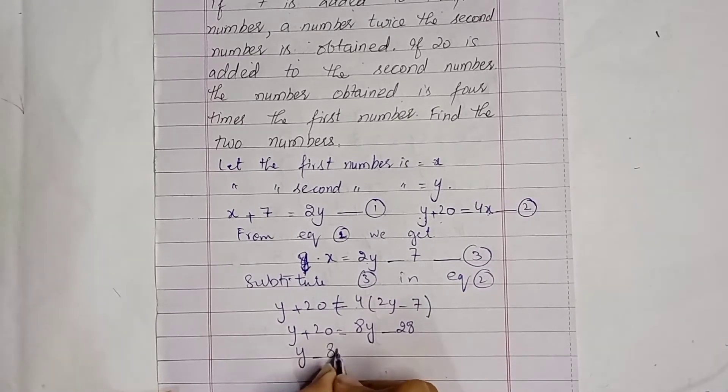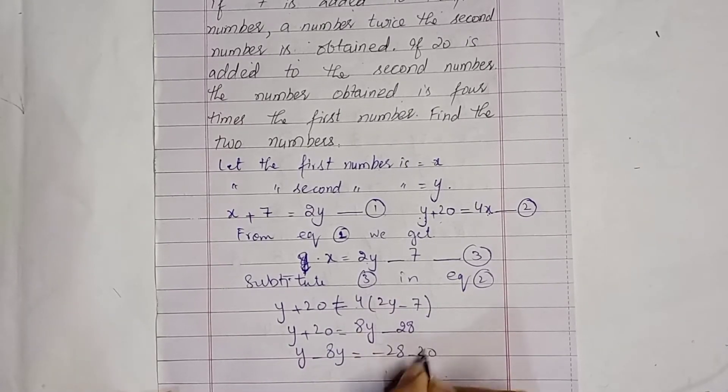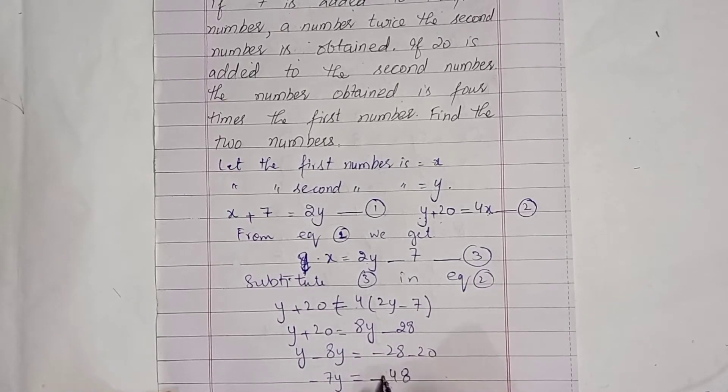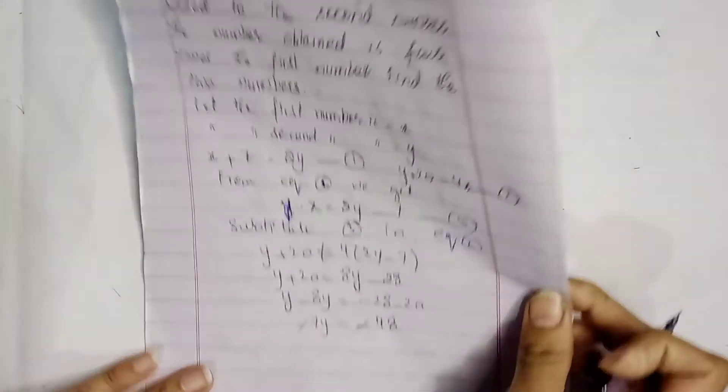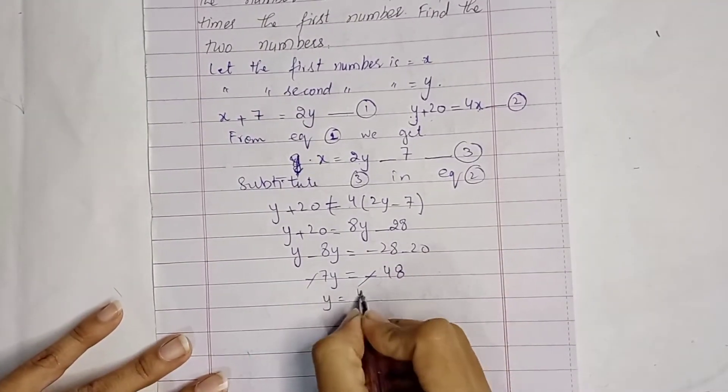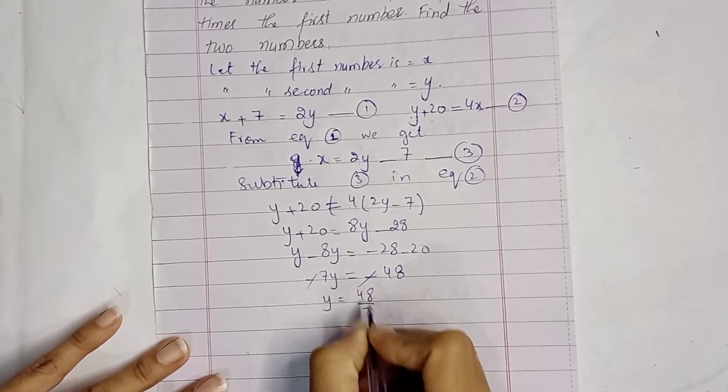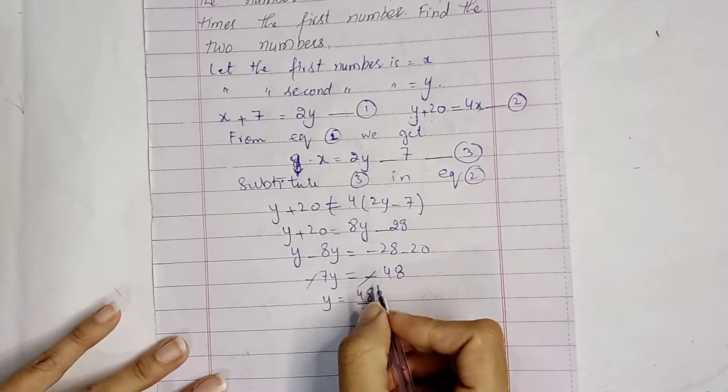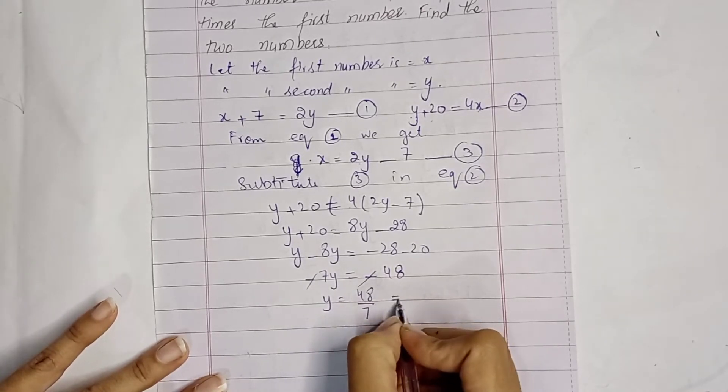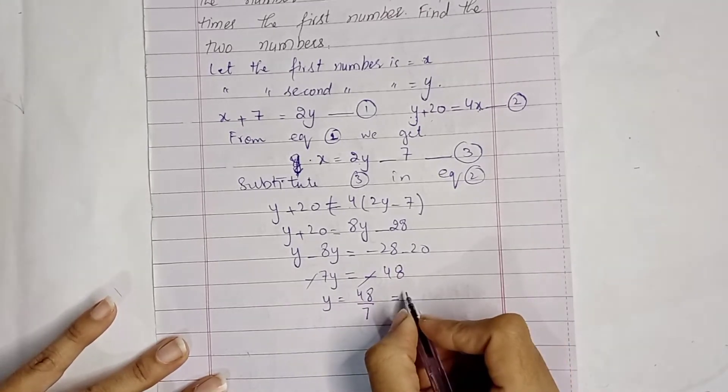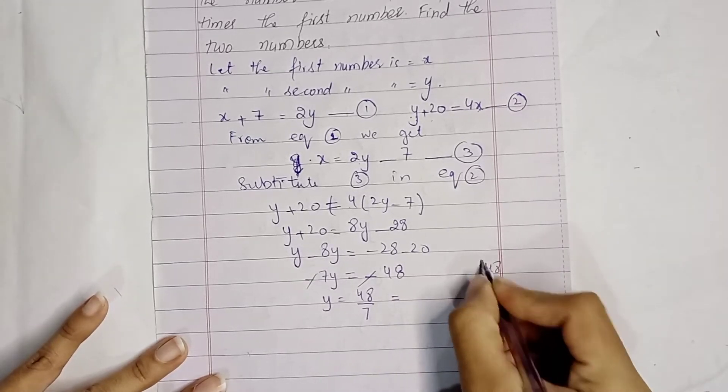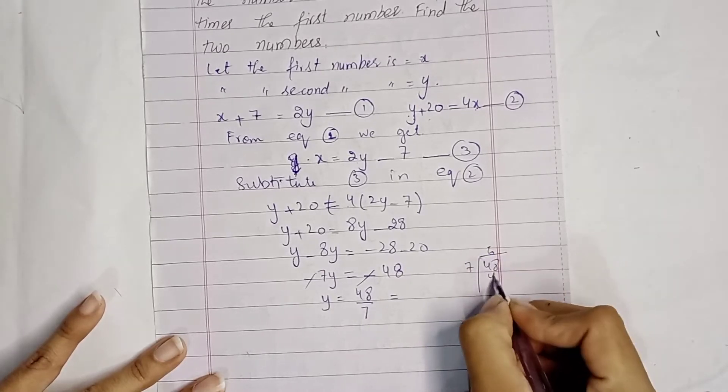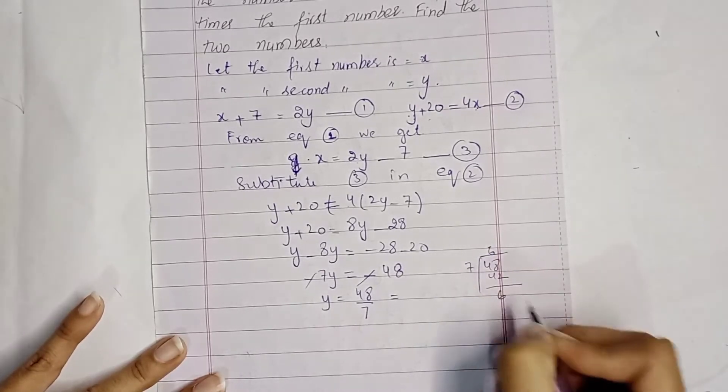y minus 8y equals minus 28 minus 20. Minus 7y equals minus 48. Cancel the negatives. y equals 48 over 7. 48 divided by 7 is an improper fraction, so we divide: 6 and 6 over 7.